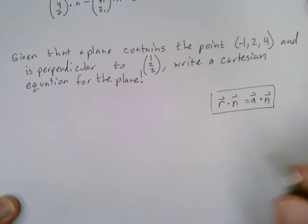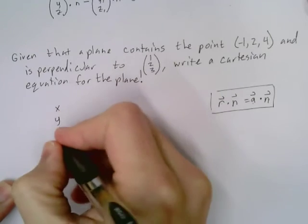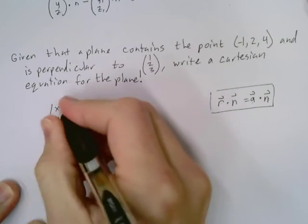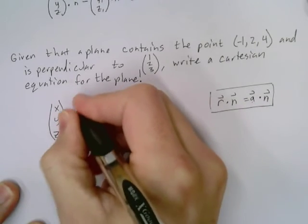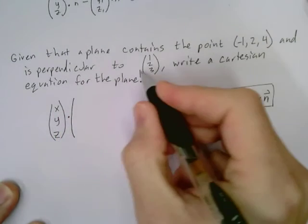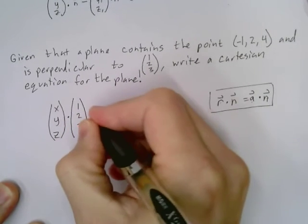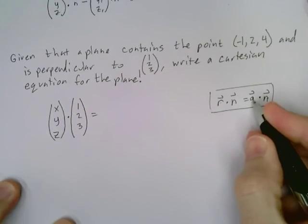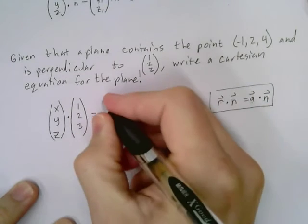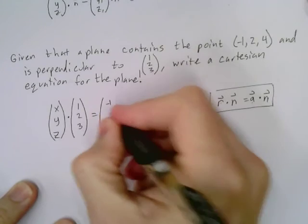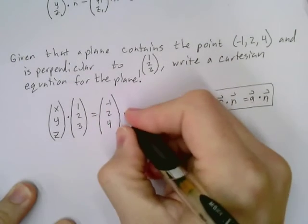So let's go ahead and do it. So R, remember, is X, Y, Z. Dot product the normal vector, which is (1, 2, 3), which will be equal to some point. Remember, A was a real point in the plane. So (-1, 2, 4) dot product N.